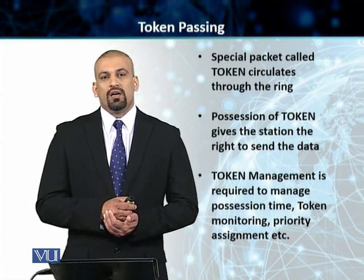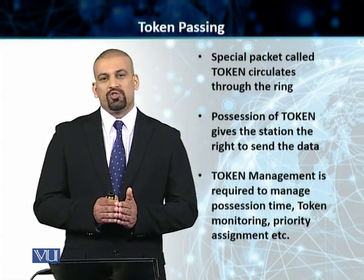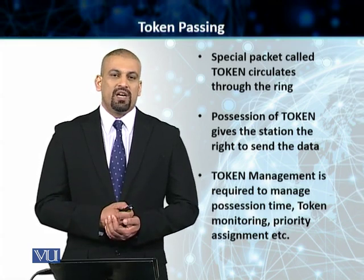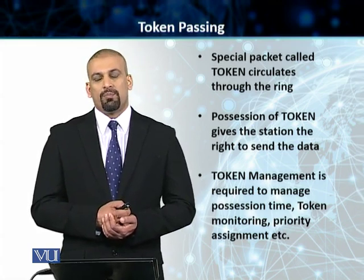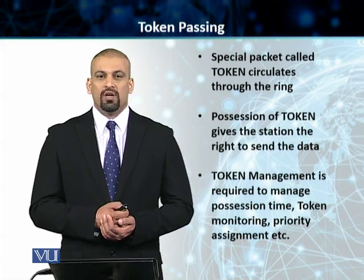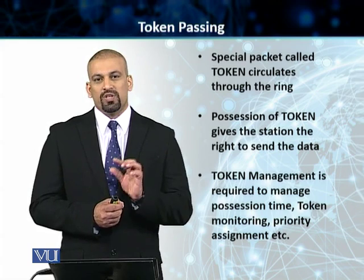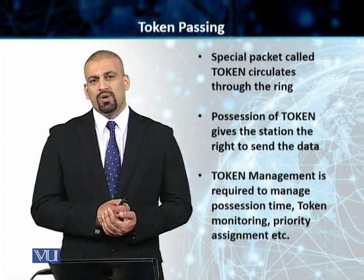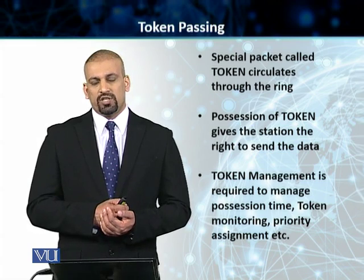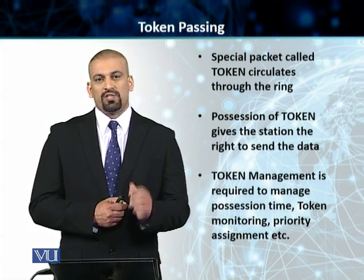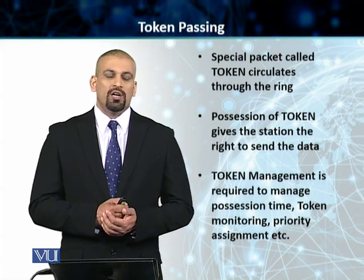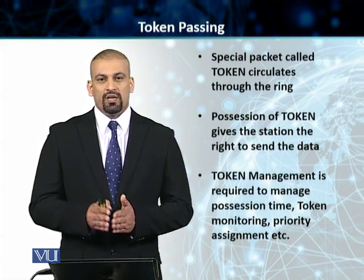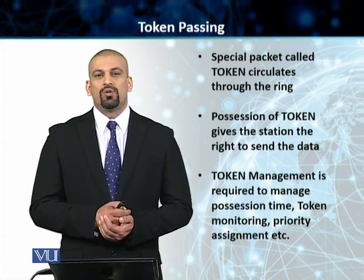Data transmission in a token ring happens by using a special packet called a token. Any station will need to have possession of this token in order to transmit data. If you don't have the token, you can't transmit. Once you receive the token — which is passed around the logical ring — only then can you transmit. Once the token is passed on to the successor, you must wait until the token comes back before you can send any more data.